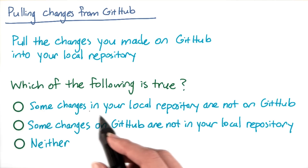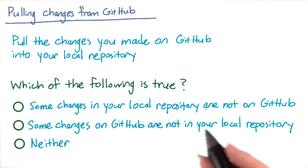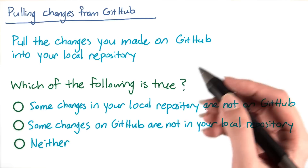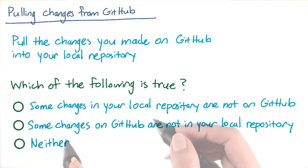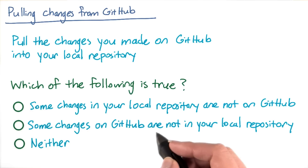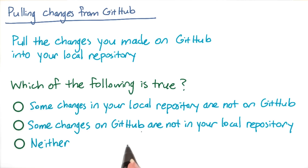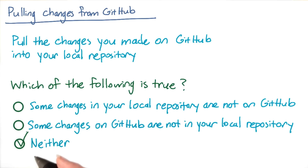There shouldn't be any changes in your local repository that are not on GitHub, because you ran git push after the most recent change you made to the local repository. Similarly, you ran git pull after the most recent change you made directly on GitHub, so there shouldn't be any changes on GitHub that aren't in your local repository. Instead, the two repositories should have the same commits right now.